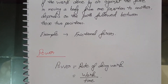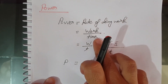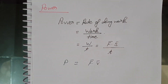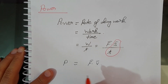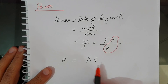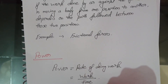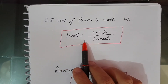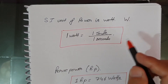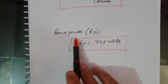Power is the rate of doing work: P = W/T. Since W = F × S and S/T = velocity v, power can also be written as P = F · v. The SI unit of power is watt. One watt is defined as one joule per second — when one joule of work is done in one second. Another popular unit is horsepower (HP), where one horsepower equals 746 watts.